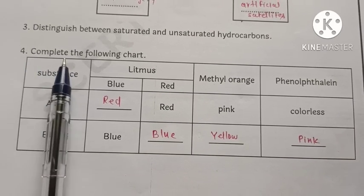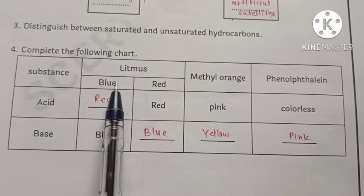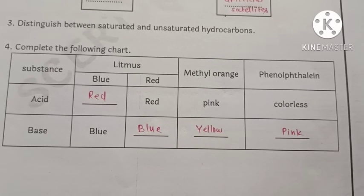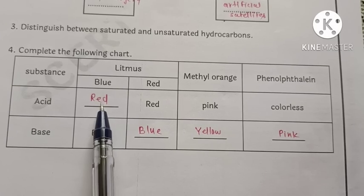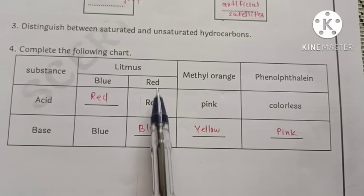Question number 4: complete the following chart. Substance, litmus blue, red, methyl orange, phenolphthalein. So, acid: blue turns red and red remains red.